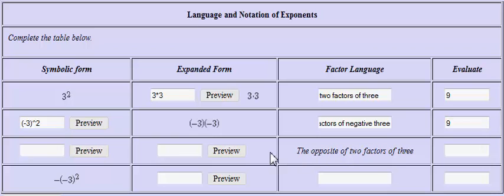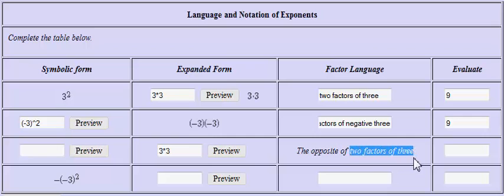Moving to the next problem, they give me the factor language: the opposite of two factors of three. Two factors of three means three times three, so I'm going to type three, then shift+8 gives me the asterisk, and then three again. What I've written — three times three — represents two factors of three, but what we want is the opposite of that. All I need to do is click to the left and insert a negative symbol, which is the button just to the right of the zero on the keyboard.